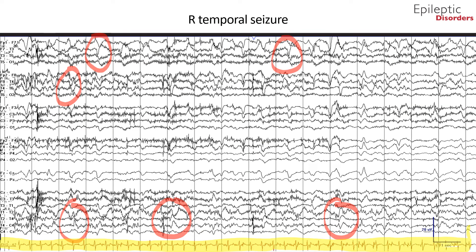In the fourth page of this seizure shown in bipolar montage, there is reduced myogenic artifact, and clinically the patient has confusion and unresponsiveness. Electrographically, there are well-formed epileptiform discharges over the right temporal region occurring at a frequency of one hertz. Additionally, there are well-formed phase reversals over the left frontal temporal regions as shown by the circle and star, representing spread of the seizure to the contralateral hemisphere. There is also tachycardia as displayed in the EKG channel below.